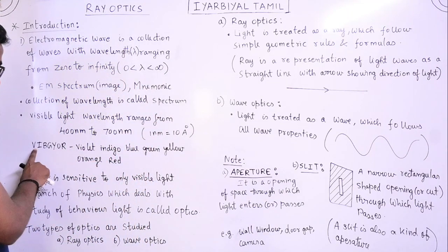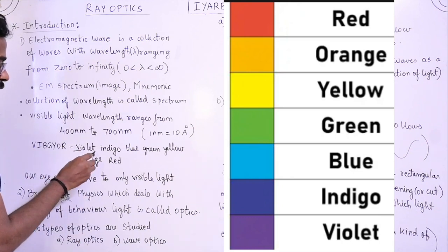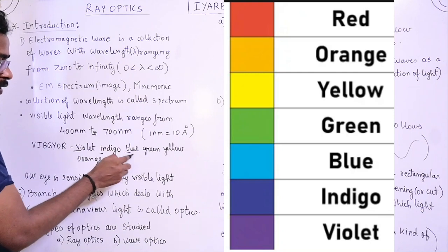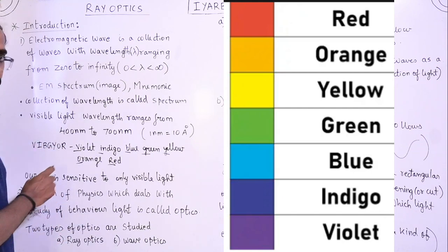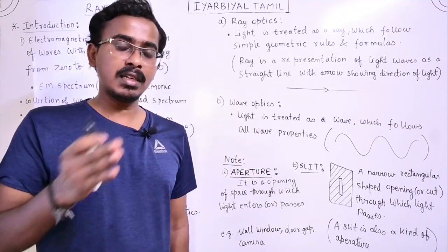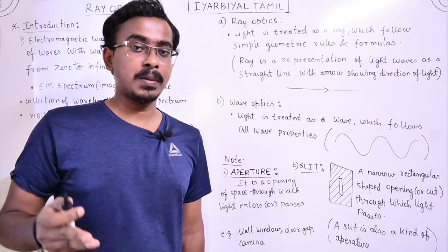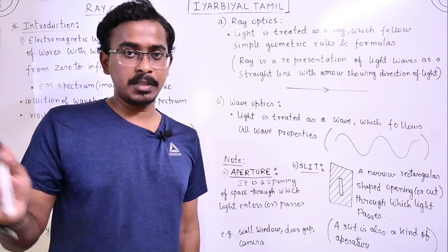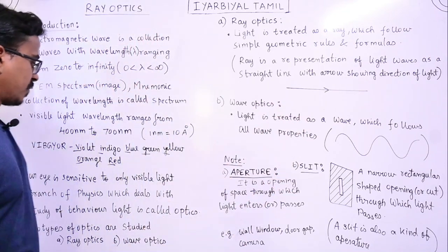To remember the visible spectrum, we use the mnemonic VIBGYOR: V = Violet, I = Indigo, B = Blue, G = Green, Y = Yellow, O = Orange, R = Red. This helps you memorize the colors corresponding to the wavelength range of 400 to 700 nanometers, which is called the visible spectrum or visible light spectrum.